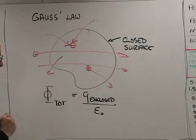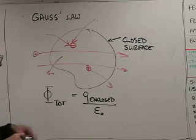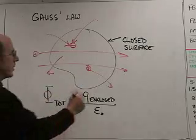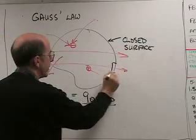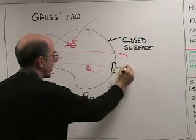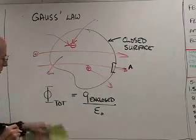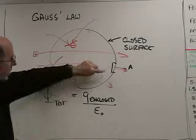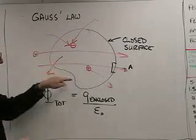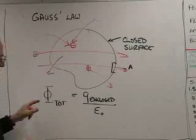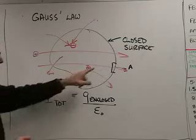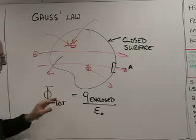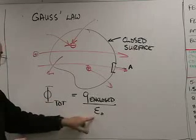I'll tell you what epsilon zero is in a minute. The flux is, at each point along the surface, you measure the electric field and dot product it with the area. So this is in some sense a summation of the flux over all parts of that area. We'll show you how to do that summation for any general surface, but for now let's look at epsilon zero.